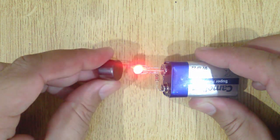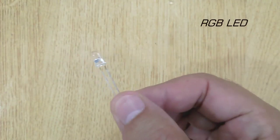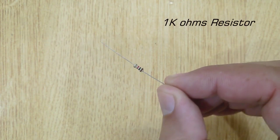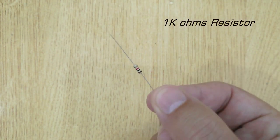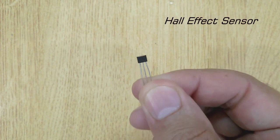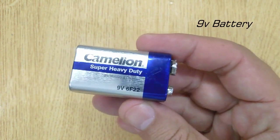To complete this project, you will need an RGB LED, 1K ohms resistor, hall effect sensor, and a 9 volt battery.